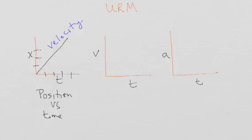Is the velocity changing? No — because it's a straight line with a constant slope. It's uniform. So if I determine my velocity to be 5 meters per second, why is the unit meters per second? Because position is in meters and time is in seconds. If I calculate the slope to be 5 meters per second, and I look at a velocity versus time graph, then my velocity is not changing. Therefore, my velocity as a function of time graph is going to be a straight horizontal line at whatever that velocity value is.